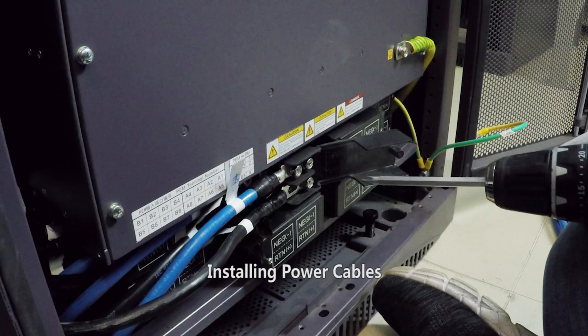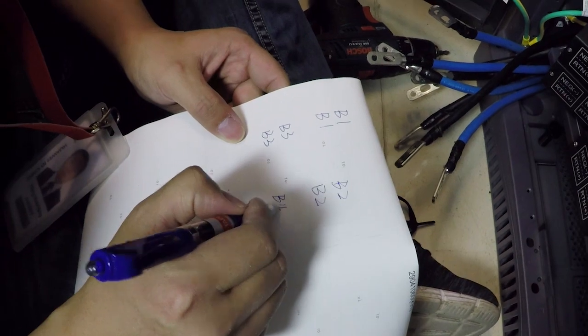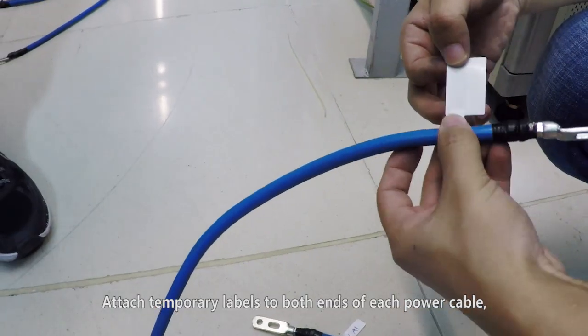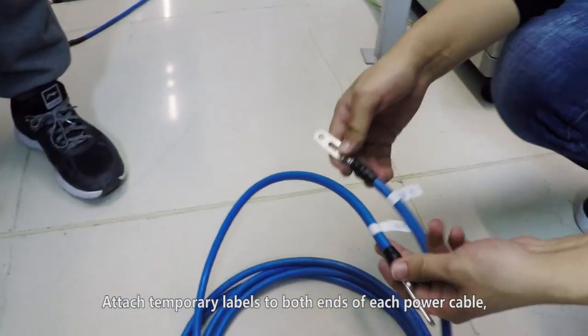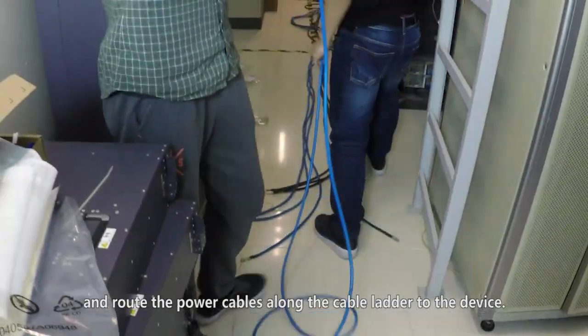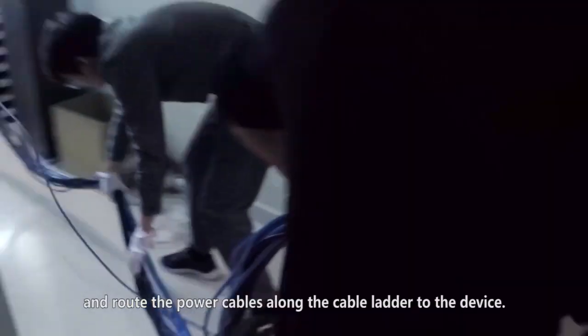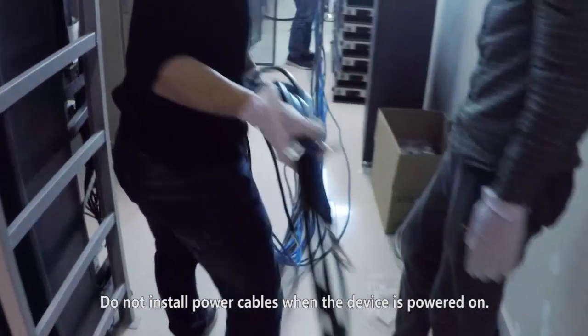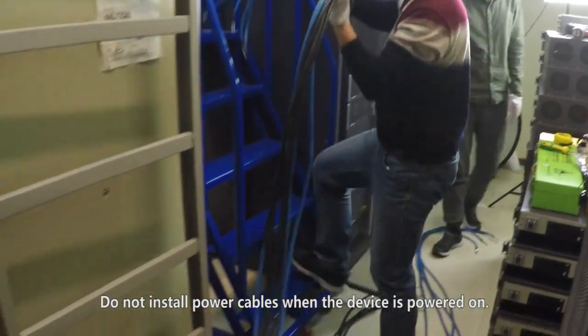Installing Power Cables. Attach temporary labels to both ends of each power cable and route the power cables along the cable ladder to the device. Do not install power cables when the device is powered on.